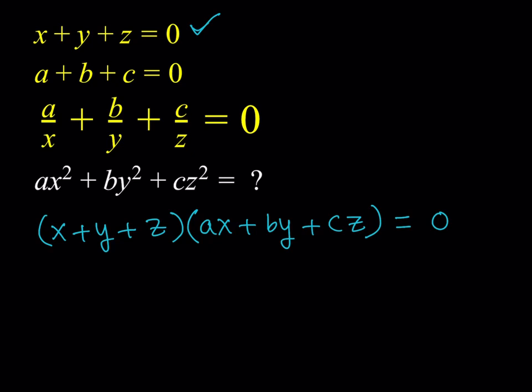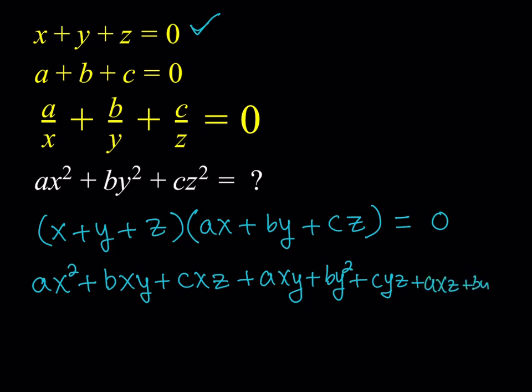So let's go ahead and do that. I'm going to distribute the x, and I'm going to write this as ax squared plus bxy plus cxz, and I'm going to follow the alphabetical order as much as I can here, plus axy plus by squared plus cyz, and then finally, we're going to distribute the z, and that's going to give us axz plus byz and cz squared.